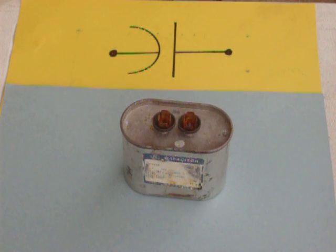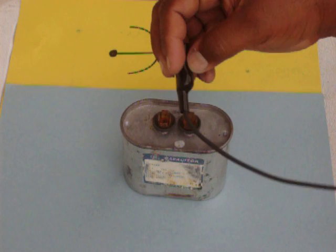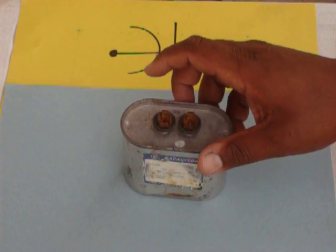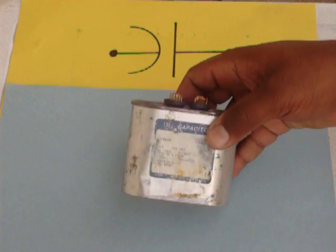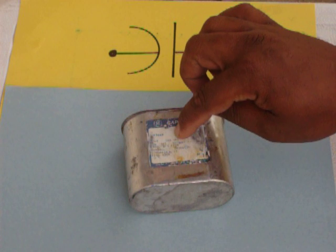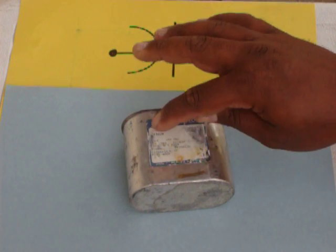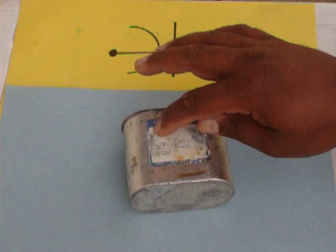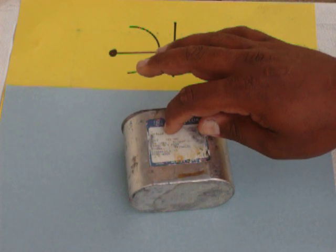Most people just take a screwdriver and short out these two terminals. After you do that, the next thing you're going to do is find the rating of the capacitor. This is a 35 microfarad by 440 volt. You need to find those two numbers, the microfarads and the voltage. Your microfarads are either going to be labeled MFD or UF.